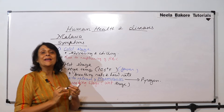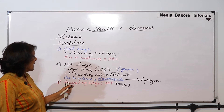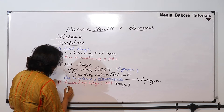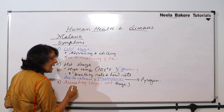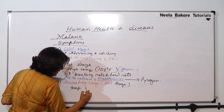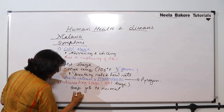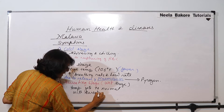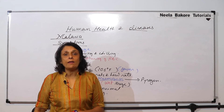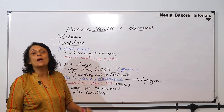Hemozoin is a pyrogen — a fever-causing or fire-generating substance. The third stage is called sweating. Here there is excessive sweating and the temperature subsides, returning to normal. The sweating is so much that the clothes the patient is wearing get completely drenched in sweat, and that is why we call it the wet stage.